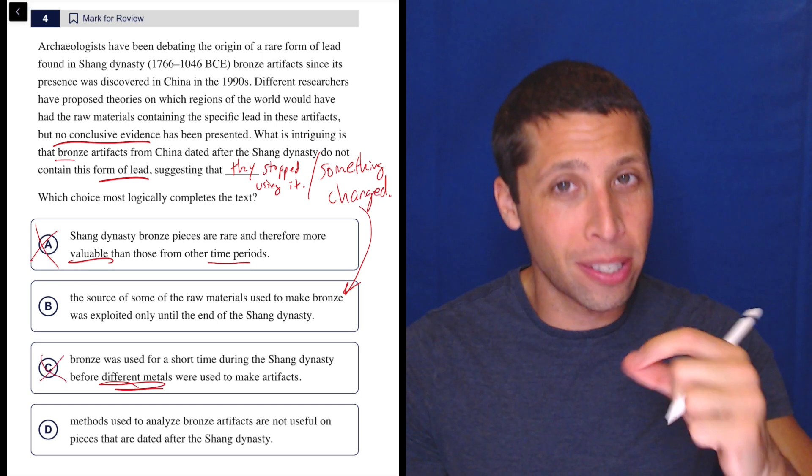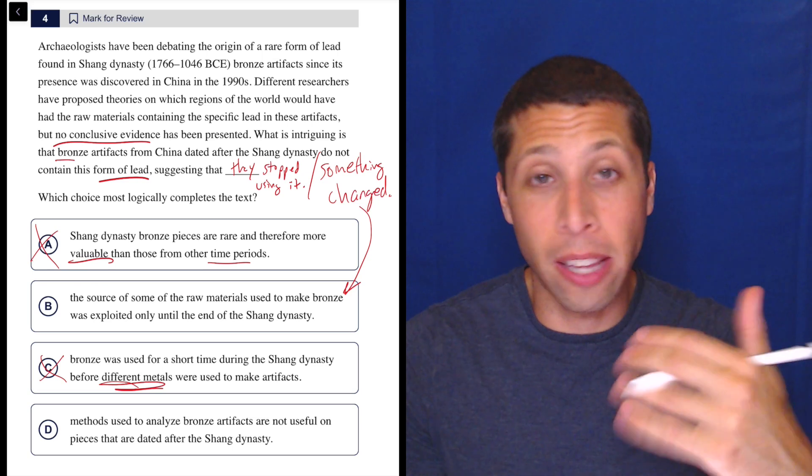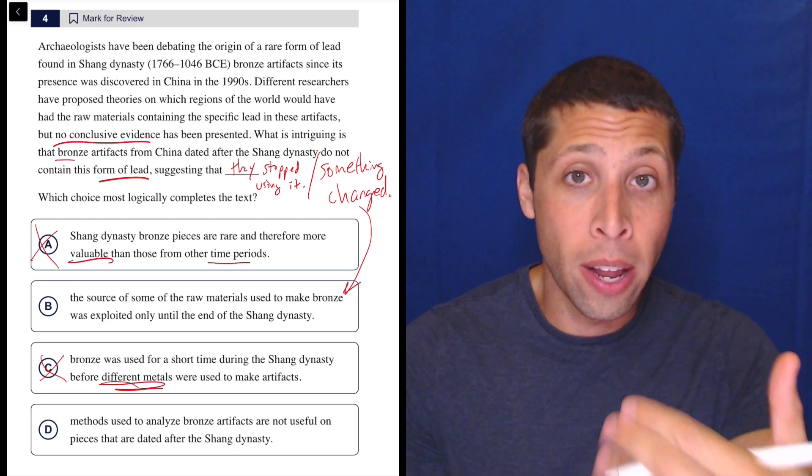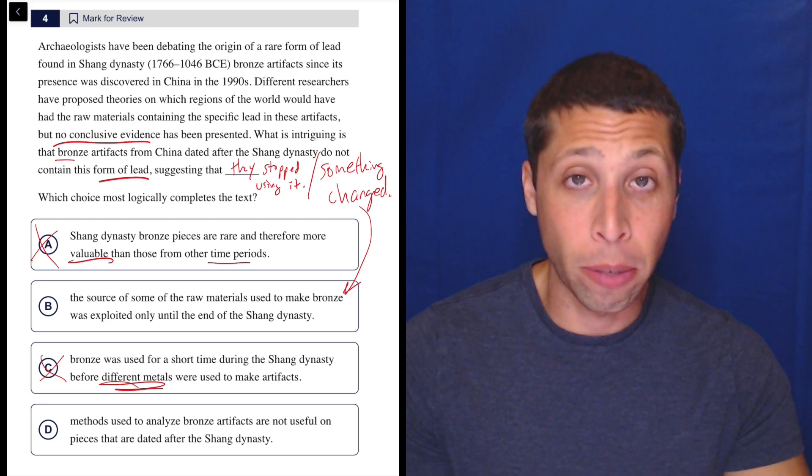They're close and it kind of sounds like what they're saying, but they're making an assumption. They are going further than the passage does. We're not allowed to do that. So we're not talking about different metals.